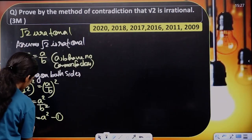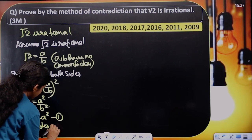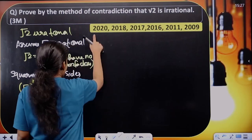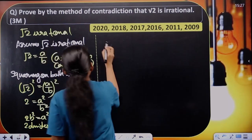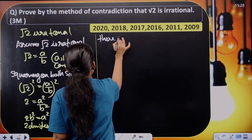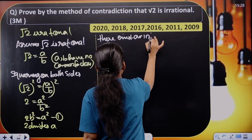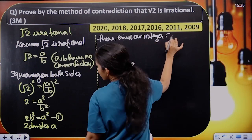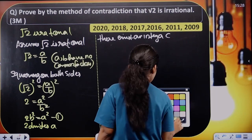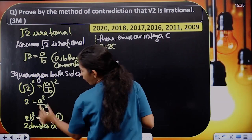From equation 1, 2B squared equals A squared, so 2 divides A. There exists an integer C. We substitute A equal to 2C, and substitute into equation number 1.